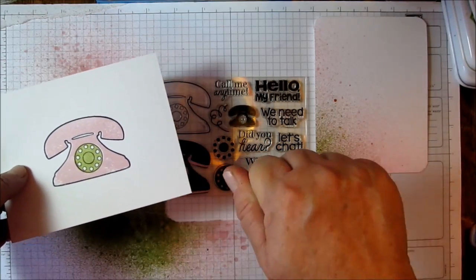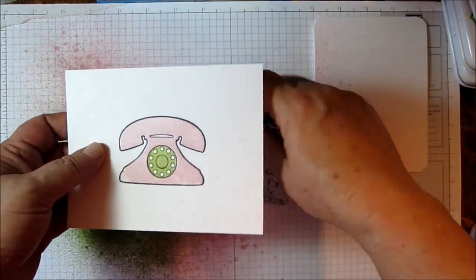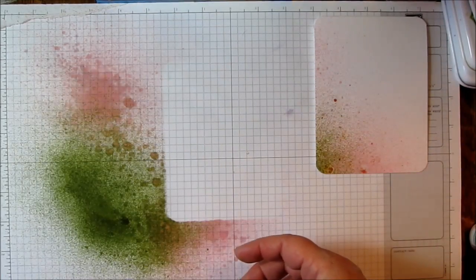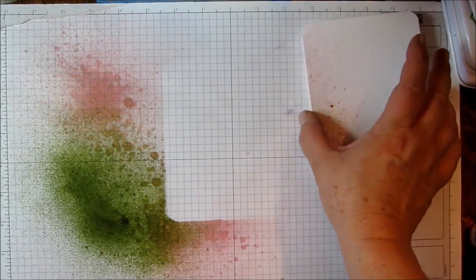I stamped once, removed some of the ink, and then stamped again so it's a little bit lighter. After I was done with that, I cut it out so it'd be all ready to attach to my card.